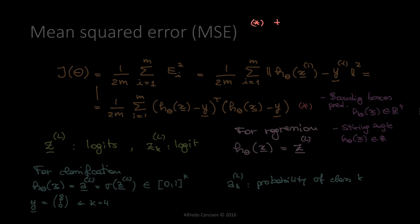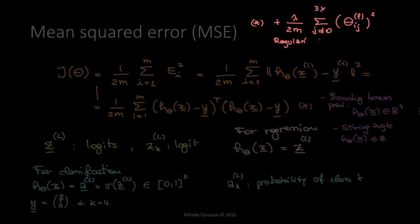We can also add a regularization term: lambda over 2m times the summation over all parameters w_{ij}^l — for all i, j, and layers l but excluding the bias term — of all weights squared. This regularization term is introduced in order to fight overfitting, or high variance models.